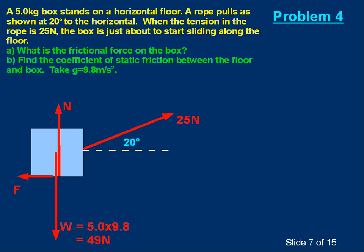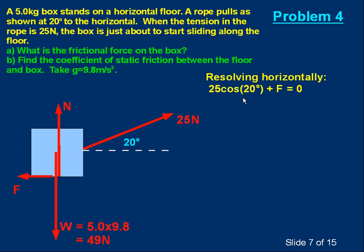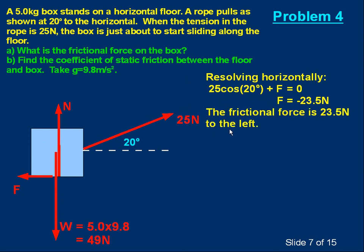What is the frictional force? The frictional force acts horizontally, so let's resolve horizontally. The box is in equilibrium, so horizontal forces add up to zero. The forces are: the horizontal component of tension, 25 cos 20 acting to the right, and the frictional force F to the left. N and W have no horizontal components. So: 25 cos 20 plus F equals zero. Doing the arithmetic gives F equals minus 23.5 newtons. The minus means it acts to the left. So the frictional force is 23.5 newtons to the left.